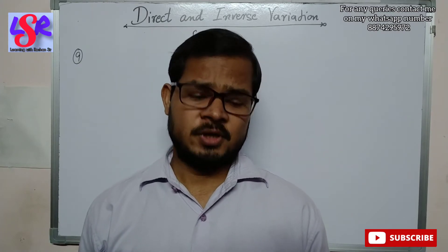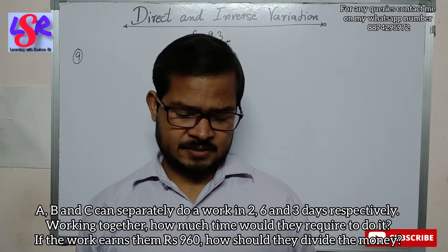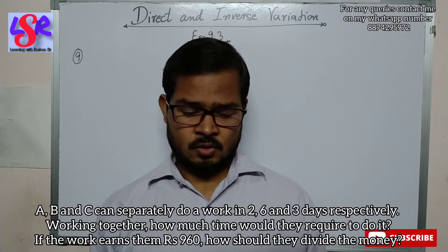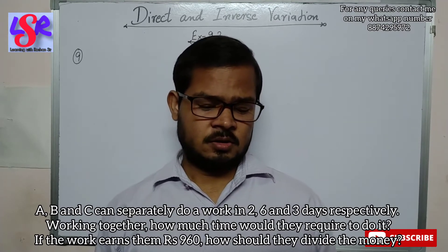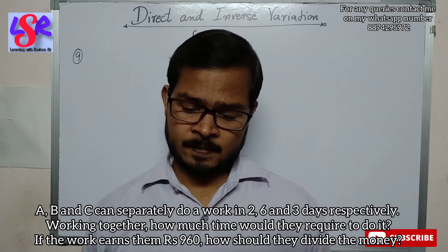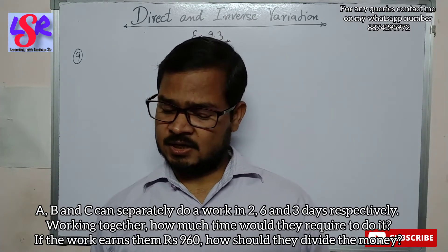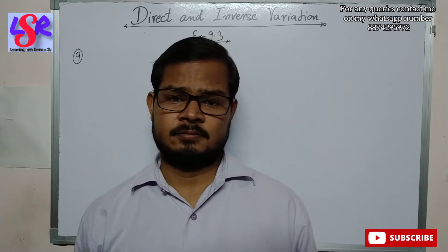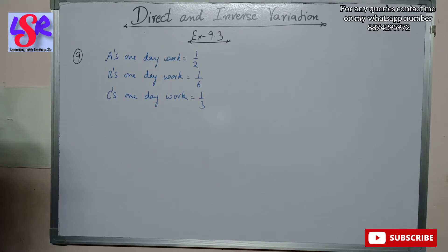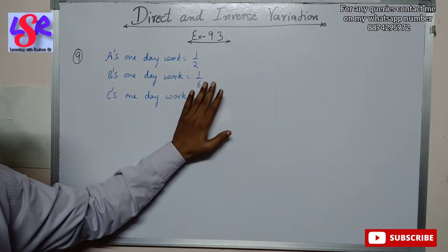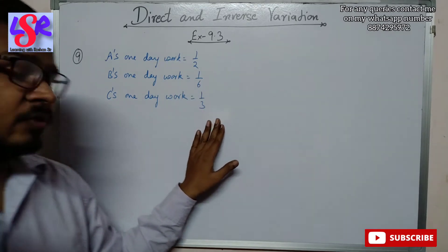In this question we have A, B and C can separately do a work in 2, 6 and 3 days respectively. Working together how much time would they require to do it? If the work earns them rupees 960, how should they divide the money? A's one day work equals 1 upon 2, B's one day work is 1 upon 6, and C's one day work is 1 upon 3.